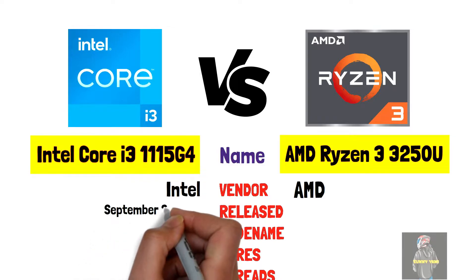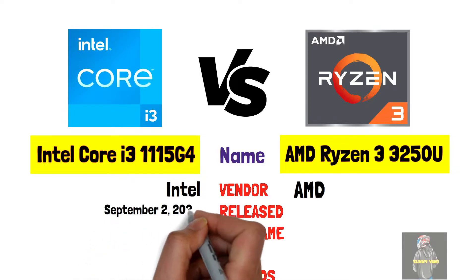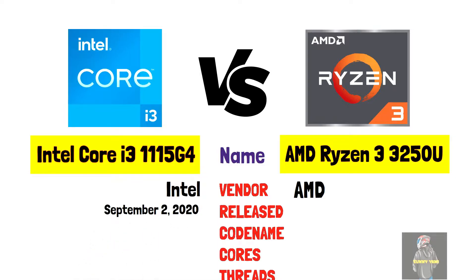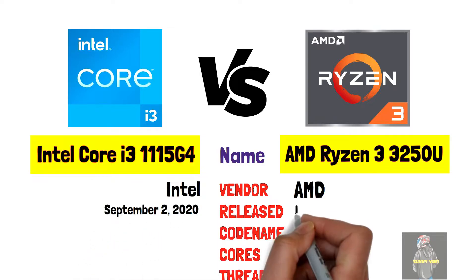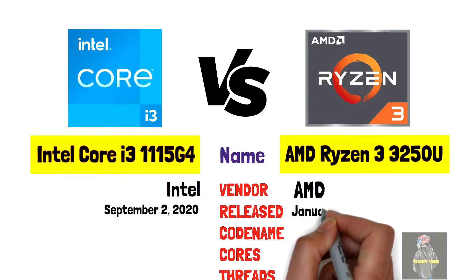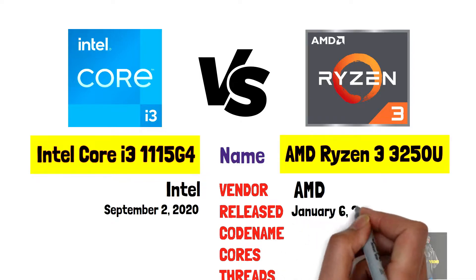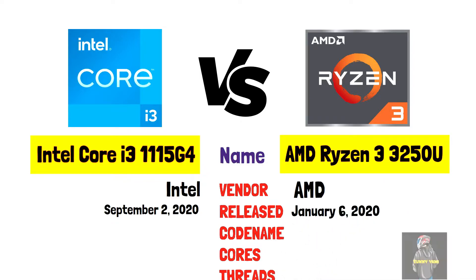Release dates: Intel Core i3-1115G4 was released September 2, 2020. AMD Ryzen 3 3250U was released January 6, 2020.